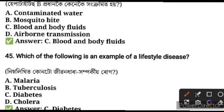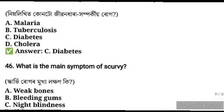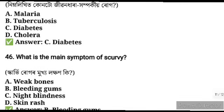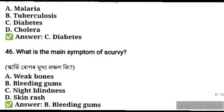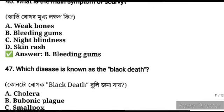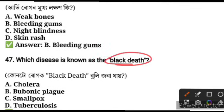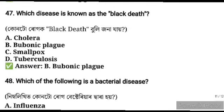Which of the following is an example of a lifestyle disease? Diabetes is a lifestyle disease. What are the main symptoms of scurvy? Scurvy causes bleeding gums. Black death — which disease is called black death? It is plague.